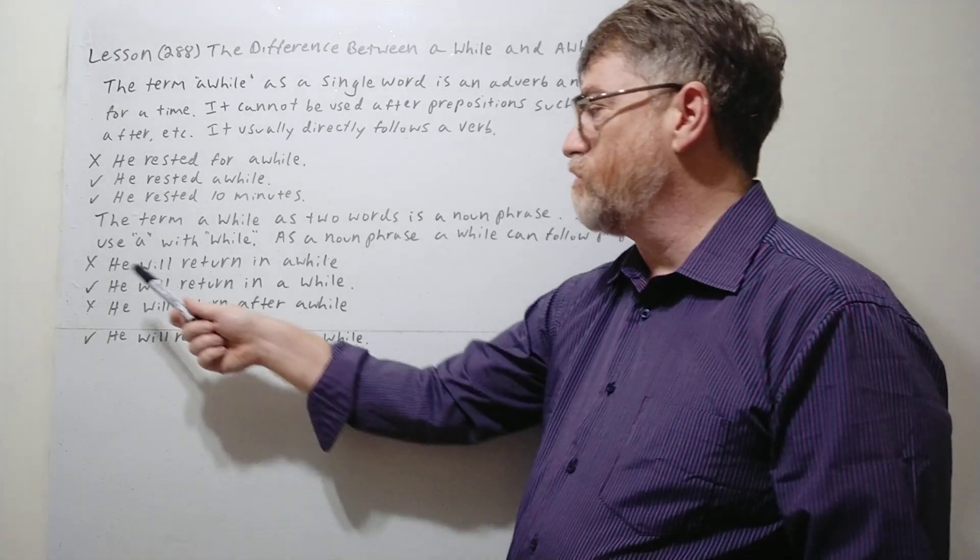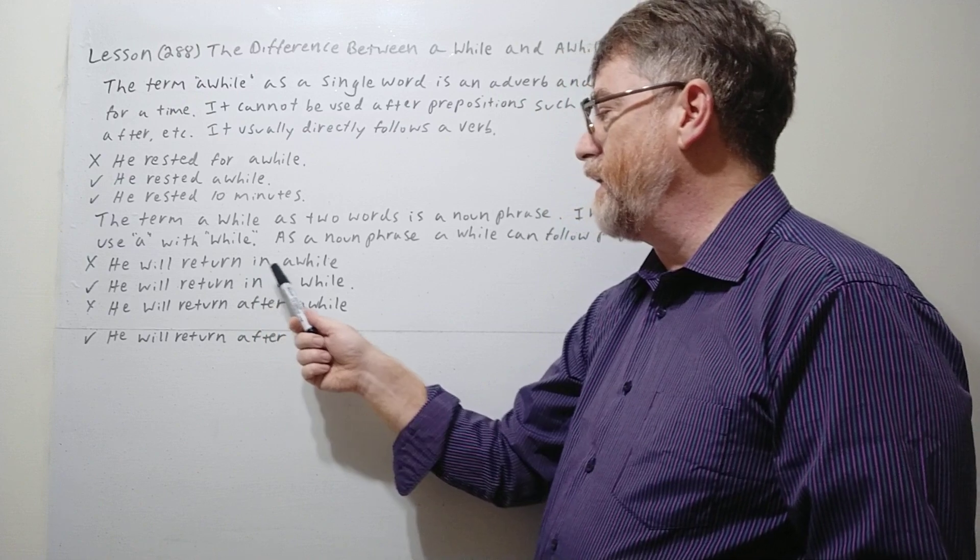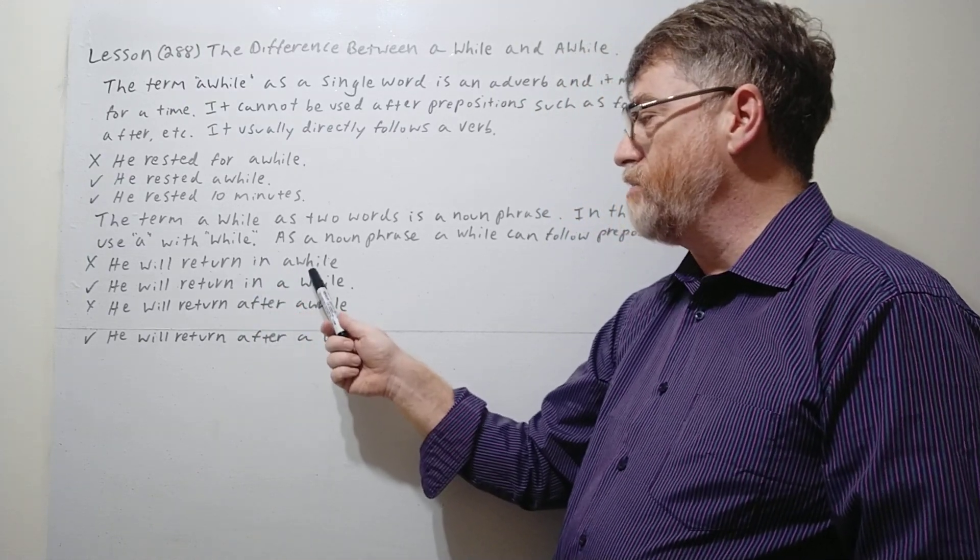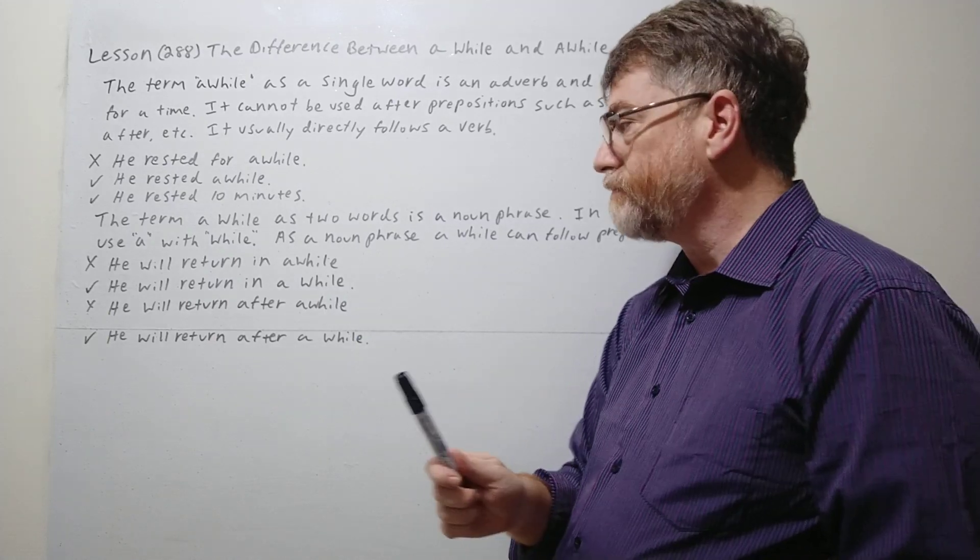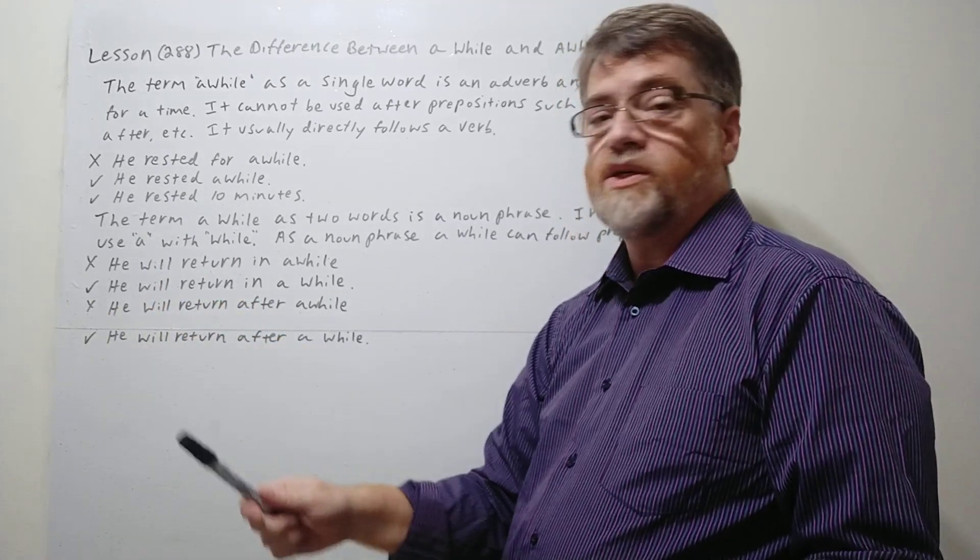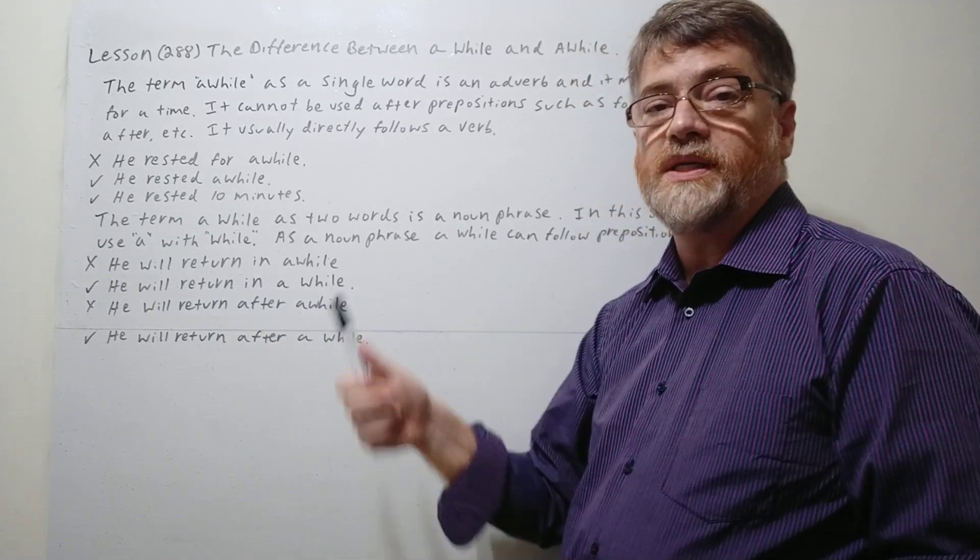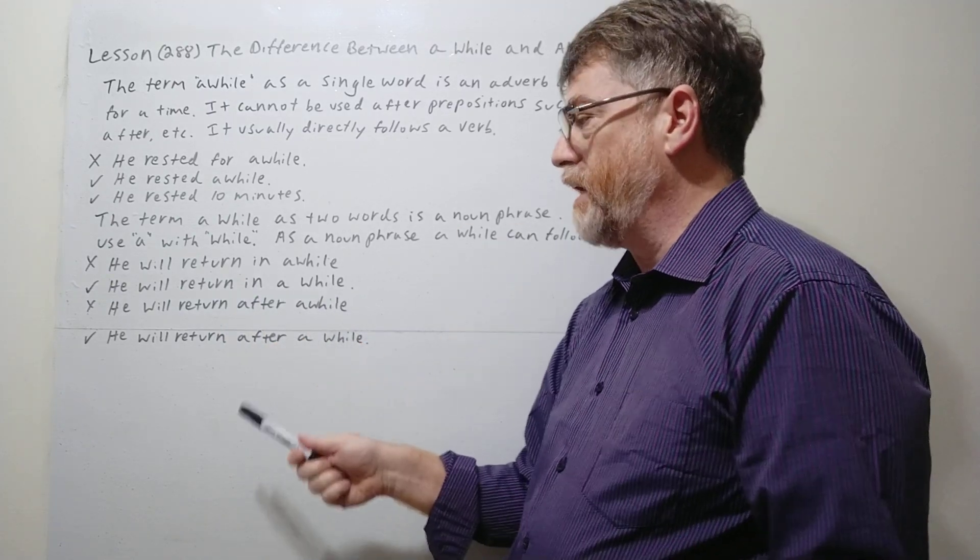Again with the X this is wrong. He will return in a while. So you're using in, it's a preposition, so you cannot be using the adverb which is a single word here. So of course with the check this is correct: He will return in a while. A while here is two words, is the noun phrase.